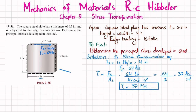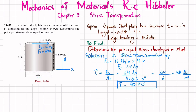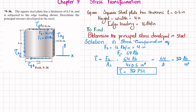Let this be your horizontal x-axis and this be your y-axis. The shear stress will be tau_xy on all faces. Now, we do not have normal stress, so sigma_x is equal to 0. We do not have stress in the y-direction, so sigma_y is equal to 0. We have only shear stress tau_xy, which is plus 32 psi.